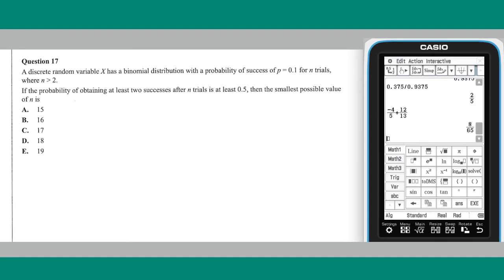Question 17. This question concerns a binomial distribution for which we know that P equals 0.1, and the probability of at least two successes is at least 0.5. As we are looking for the smallest value of n for which this is the case,